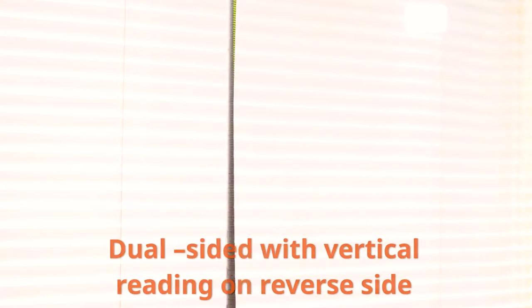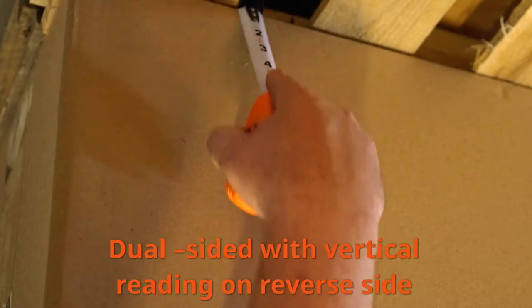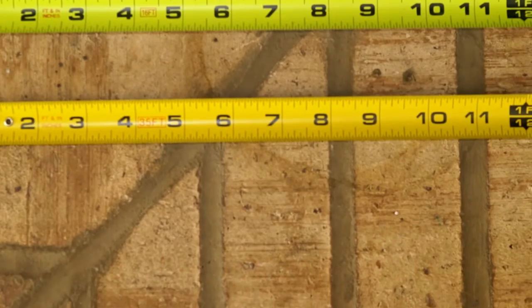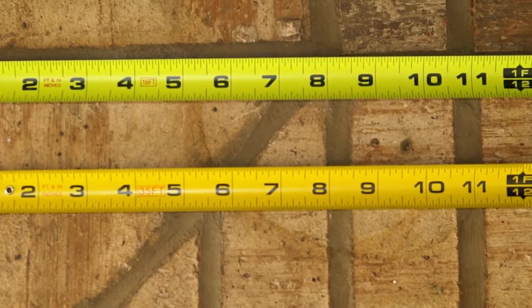The blade is dual sided with the reverse side featuring a vertical reading feet and inches scale. The numbers on the blade are bigger than the chrome or toggle series.